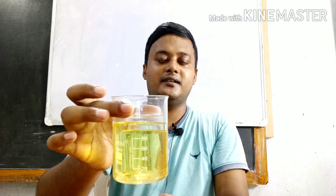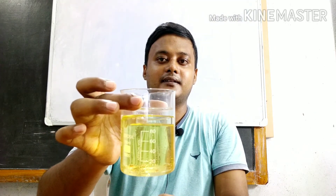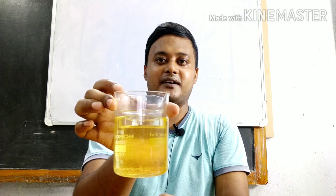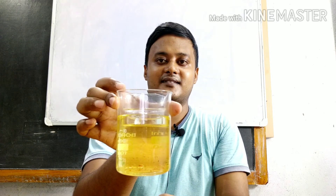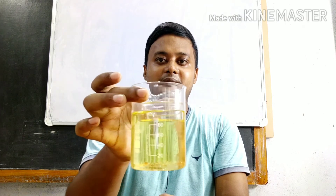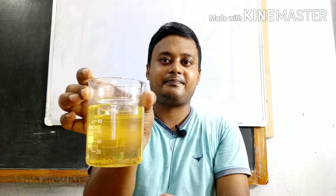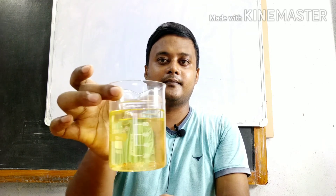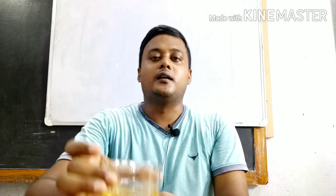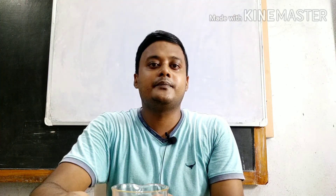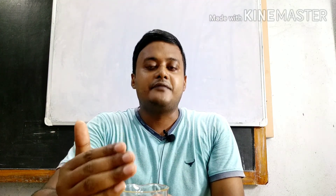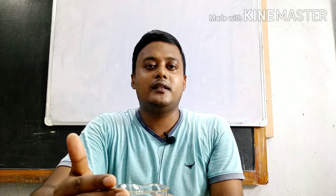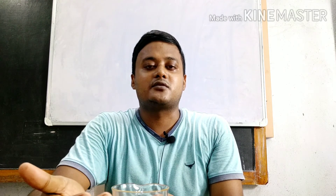See, that small beaker — it becomes invisible. You cannot see the small beaker inside that large beaker; it becomes invisible. Now, what is the science behind it? The refractive index of glass and that oil is the same — that's why the small beaker becomes invisible inside the large beaker.